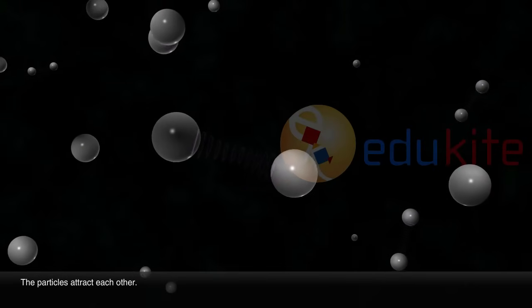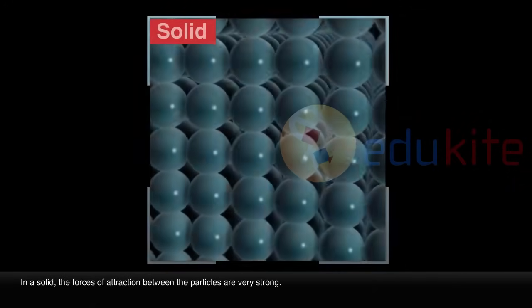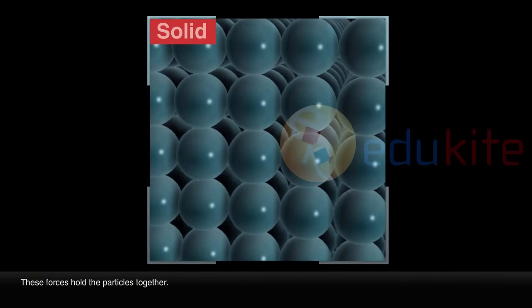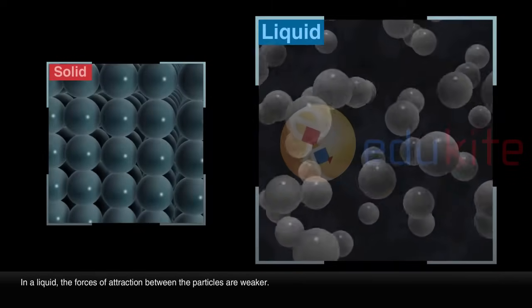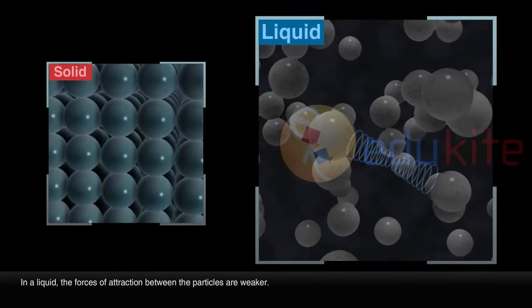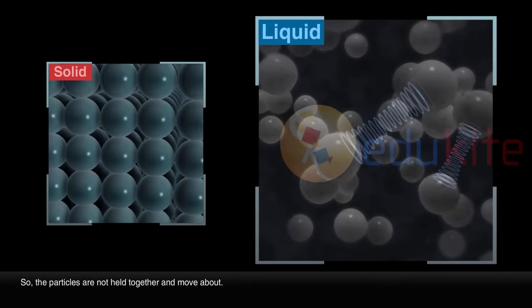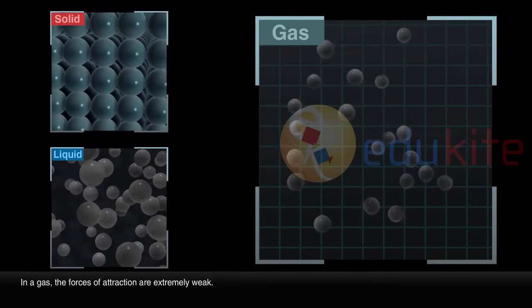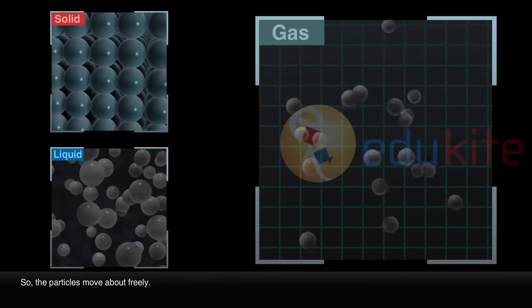The particles attract each other. In a solid, the forces of attraction between the particles are very strong. These forces hold the particles together. In a liquid, the forces of attraction between the particles are weaker, so the particles are not held together and move about. In a gas, the forces of attraction are extremely weak, so the particles move about freely.